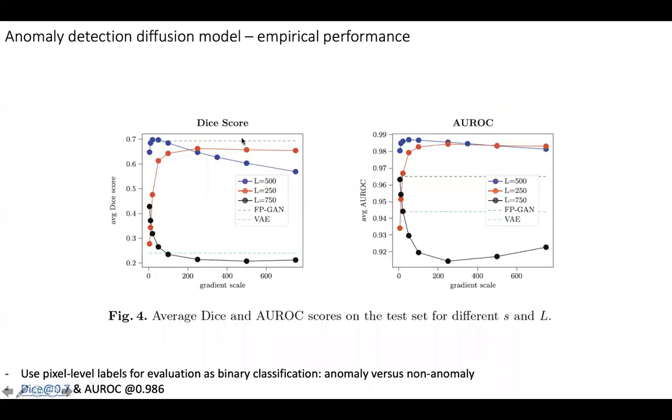And here is a plot demonstrating the quantitative performance of the approach. The DICE score that can be achieved by this approach is about 0.7, and the highest AUROC score that can be achieved by this approach is about 0.986. Yeah, okay, that's all. Thank you.